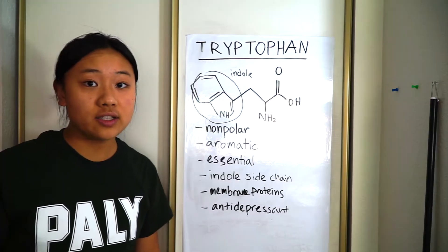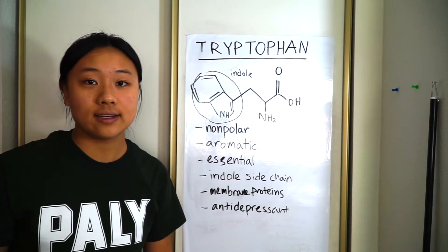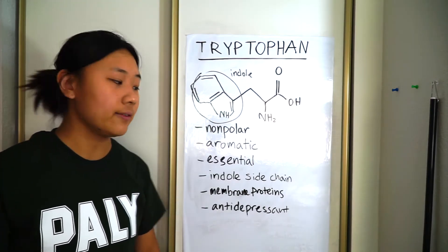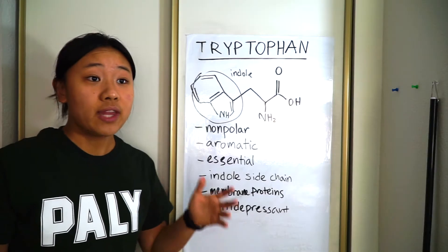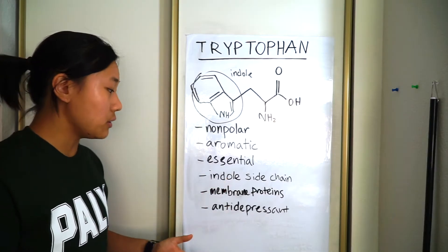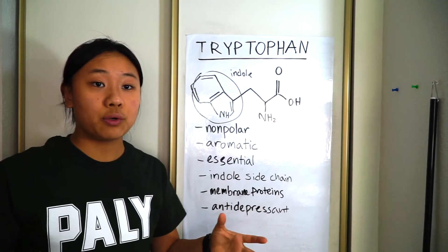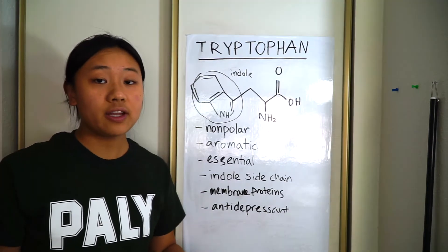It's an essential amino acid, which means we can't synthesize it in our body and we need to obtain it from our diet. And because of its chunky side chain, it's actually used in membrane proteins as a way for the protein to anchor themselves within the lipid bilayer.